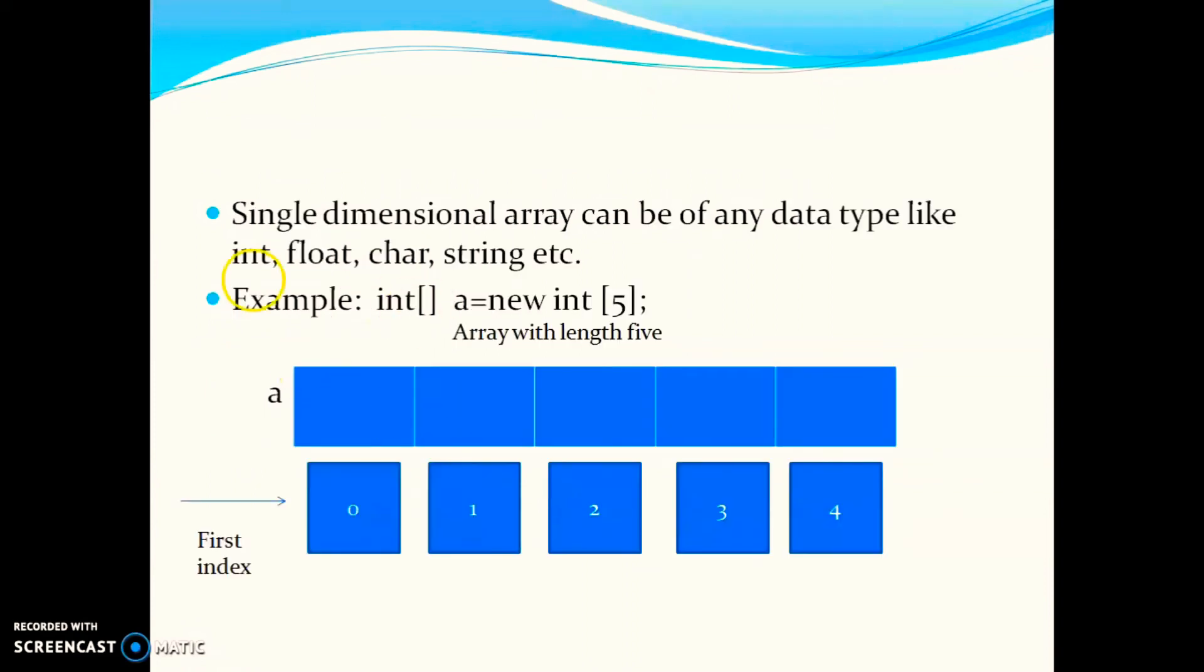You can see here one simple example: int square bracket A equal to new int of 5. So this is a simple Array of type integer. You can declare different types of Arrays like integer, float, character, or string based on your requirement.